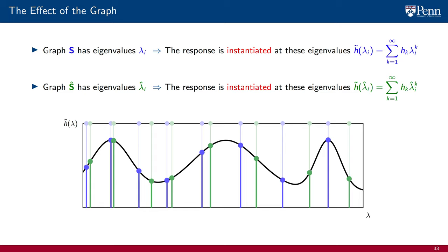This is the fundamental insight in the analysis of graph perturbations. To analyze how a filter changes when we change the graph, we just need to study how eigenvalues of the shift operator change. We need to compare the two different sets of eigenvalues that appear in this figure.